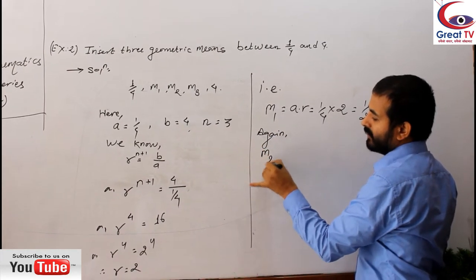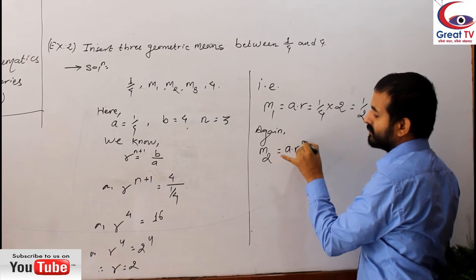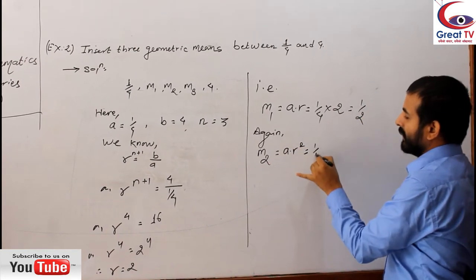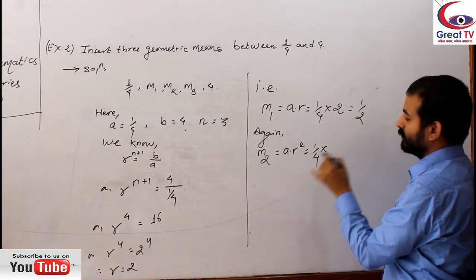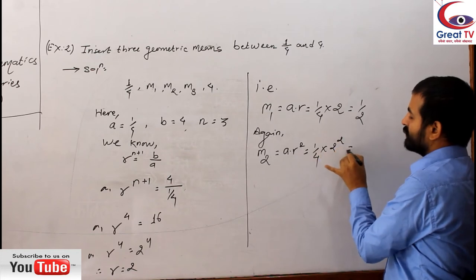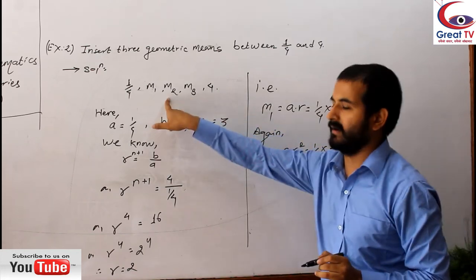Let's calculate the second mean. M2 equals to A·R². A means 1/4, R means 2, 2 squared. So you will get 1. So this is 1, my dear students.